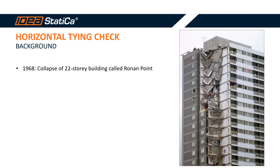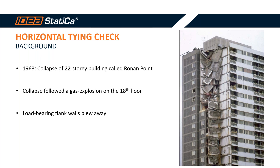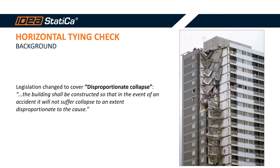Back in 1968, Ronan Point, a 22-story building, partially collapsed just two months after it had opened. The collapse happened following a gas explosion that took place on the 18th floor of the building. This explosion blew out the load-bearing flank walls which had been supporting the four floors above. The outcome of this unfortunate event was that four people died and 17 were injured. In the aftermath of this tragic event, the relevant legislation changed to cover what is now known as disproportionate collapse.